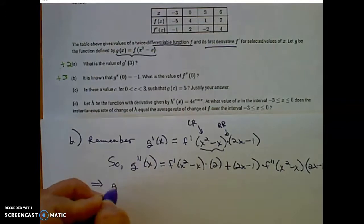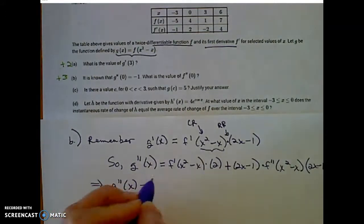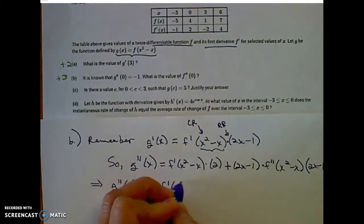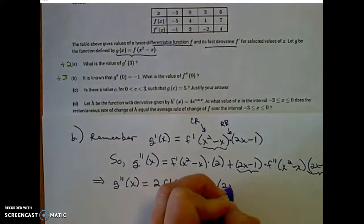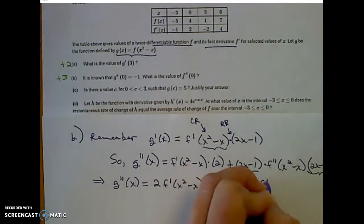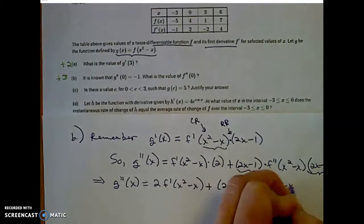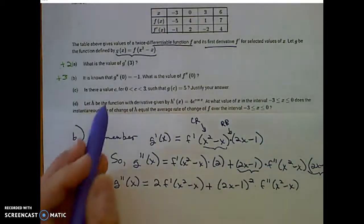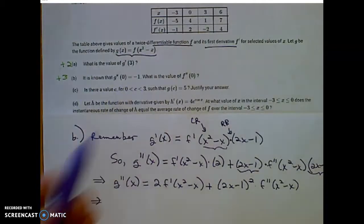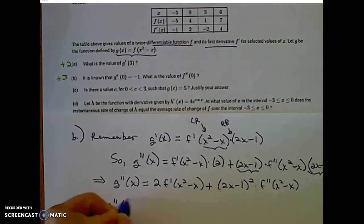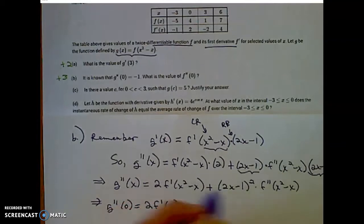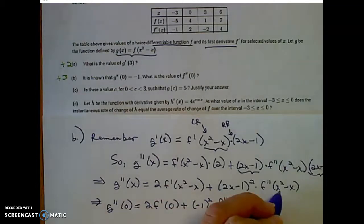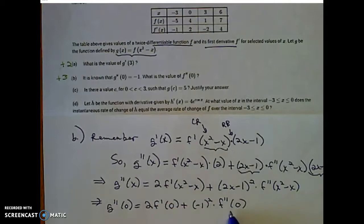Cleaning that up, g double prime of x is equal to 2 times f prime of x squared minus x, plus 2x minus 1 squared times the second derivative f double prime of x squared minus x. We were given that g double prime of 0 is equal to negative 1, so plugging in 0 for x: g double prime of 0 is 2 times f prime of 0, plus negative 1 squared times f double prime of 0. And remember, f double prime of 0 is what we're asked to find.